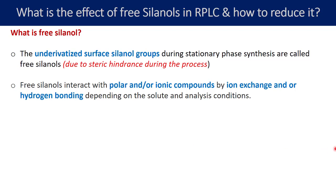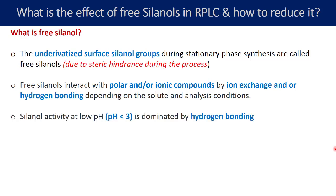Let us understand in what conditions ion exchange interaction is possible and at what conditions hydrogen bonding is possible. The silanol activity at low pH — if your pH is less than 3 — is actually dominated by hydrogen bond formation. Below pH 3, the silanol groups remain un-ionized, but hydrogen is still present on the silanol SiOH, and this hydrogen can form hydrogen bonds with basic analytes.